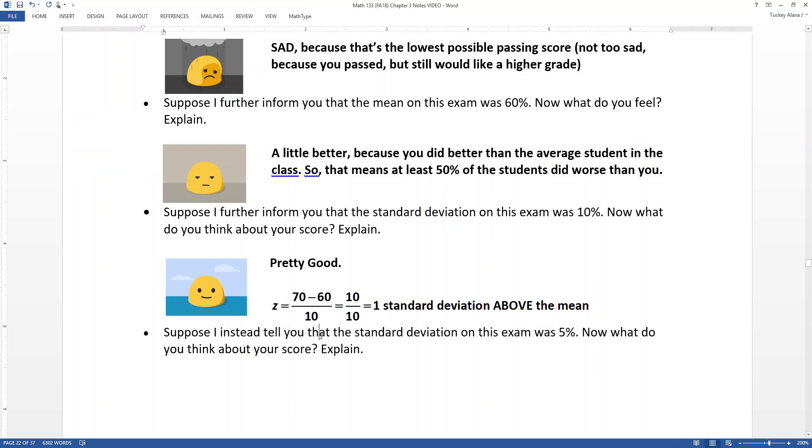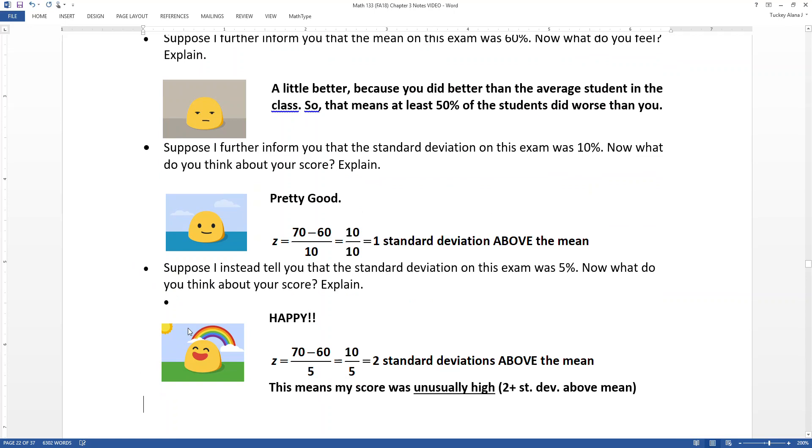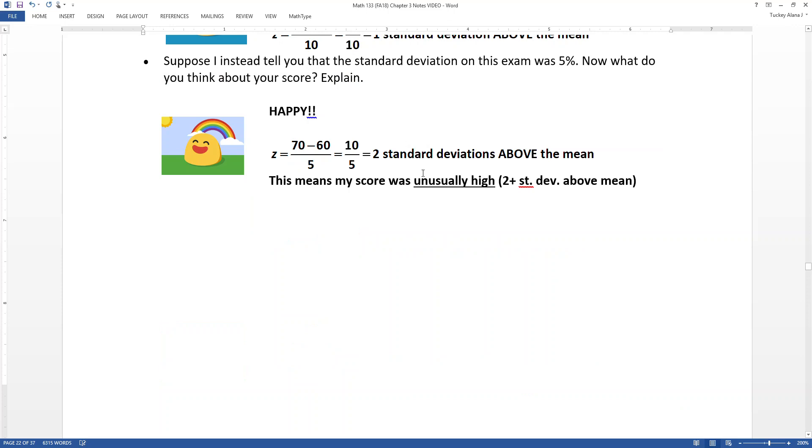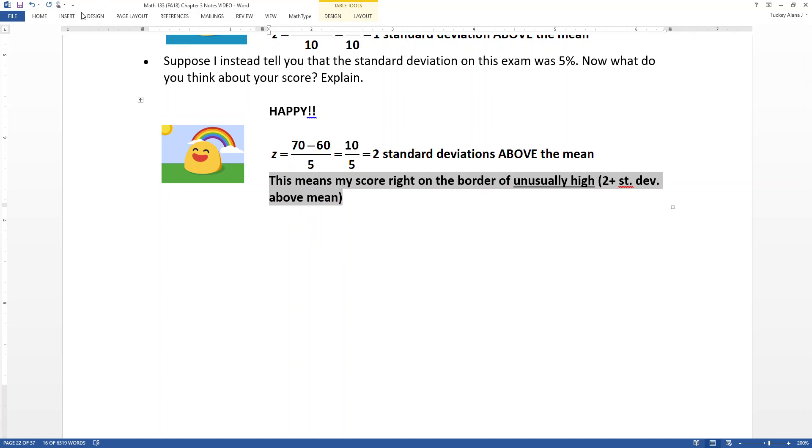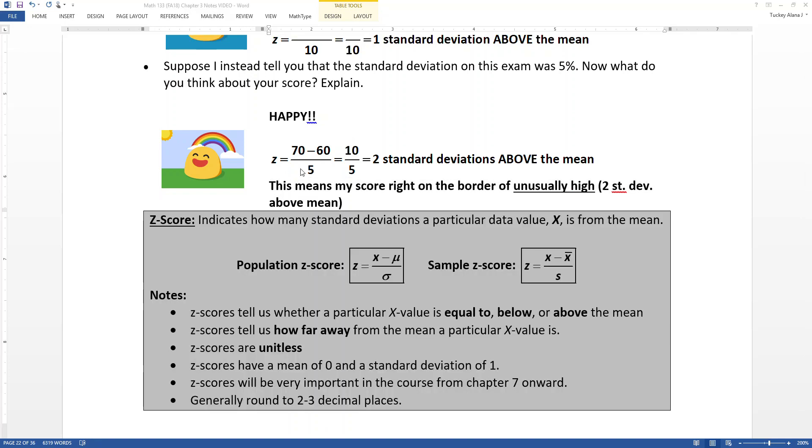All right, now I tell you, whoa, whoa, whoa, sorry, I screwed up. My fault. The standard deviation on this was actually 5. And now you're feeling really good about yourself because even though you scored a 70, you did better than a lot of the students in the class. So it's not technically unusually high, but it's right on the border of unusually high. You're two standard deviations above the mean, and that's unusually high. Well, it's just on the verge of being unusually high.